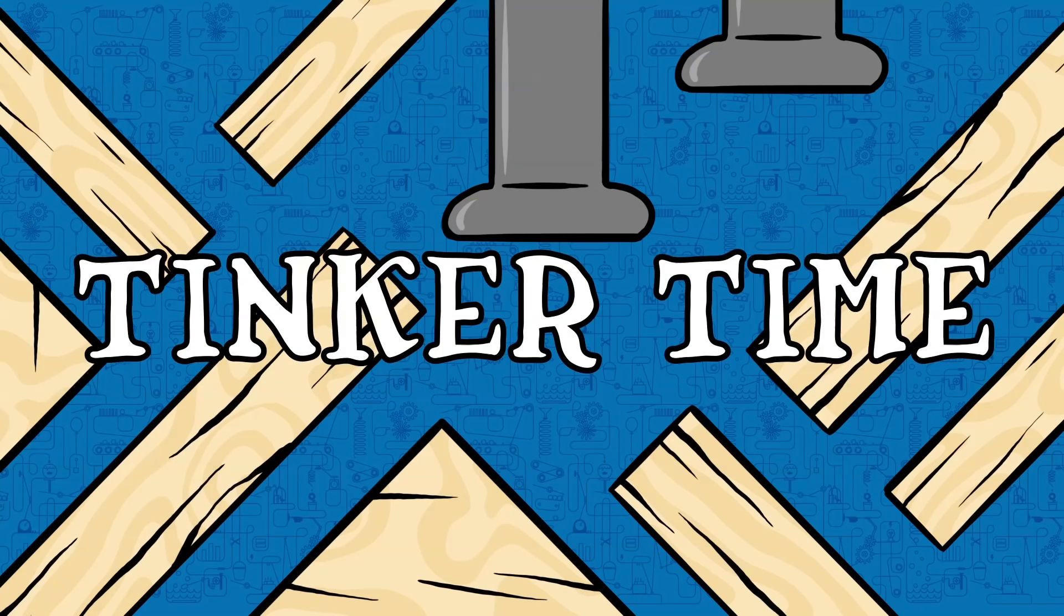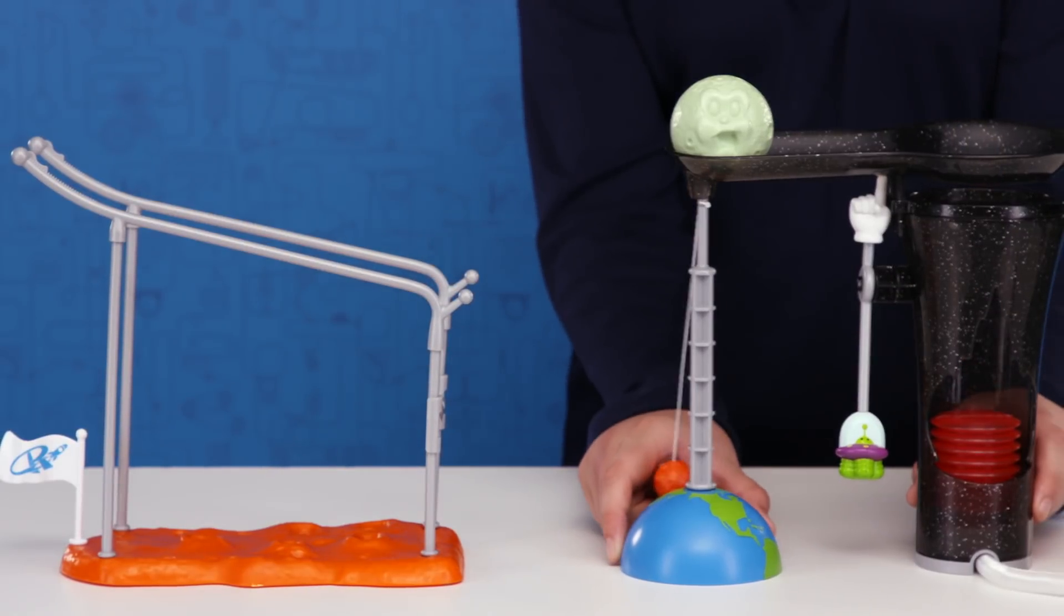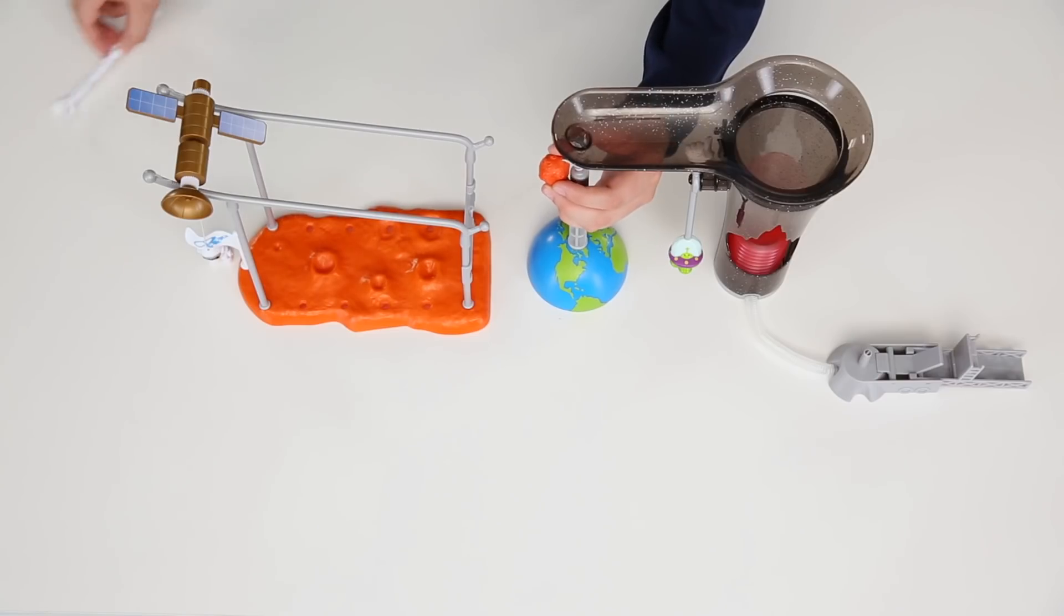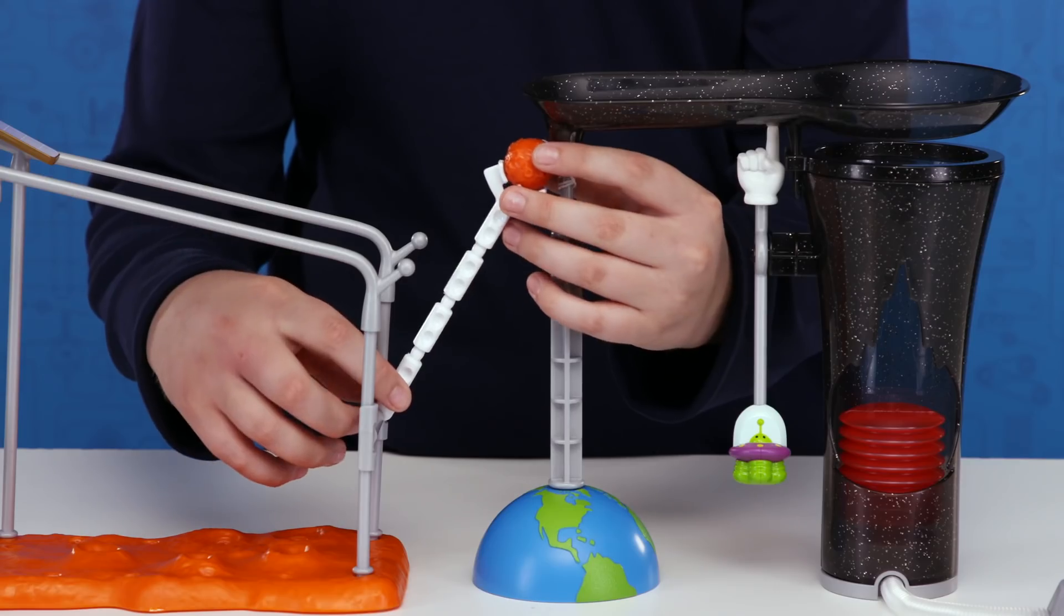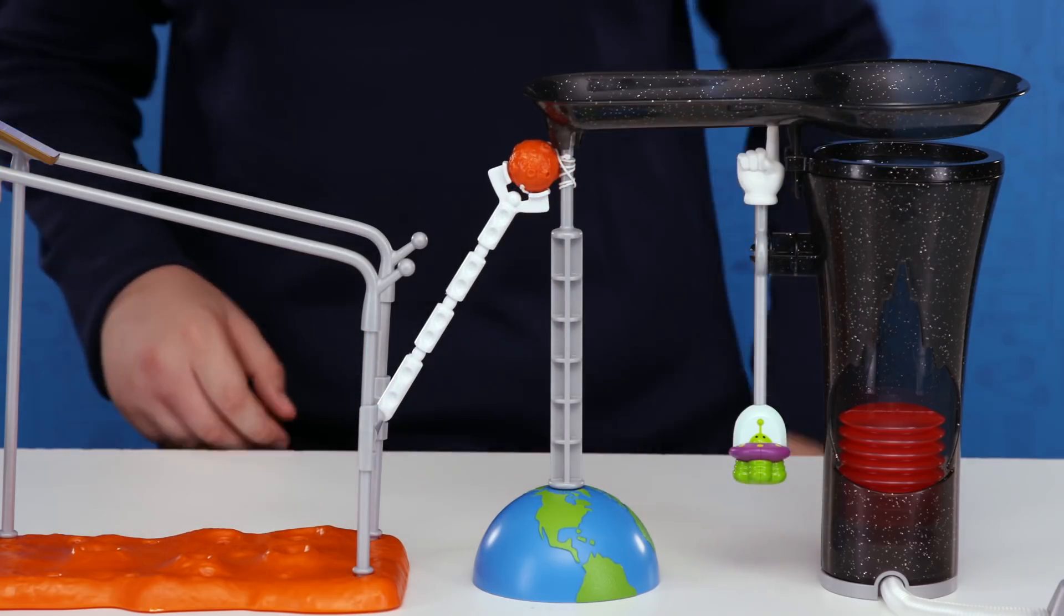Tinker time! We need to reduce the distance between the Earth and the Mars base. This puts the space arm in a higher angle and allows Rube and the satellite to come in contact and knock it down!